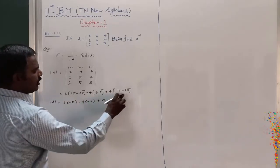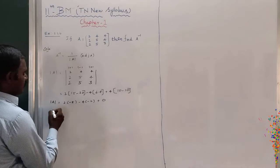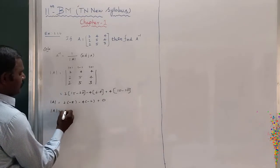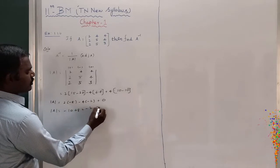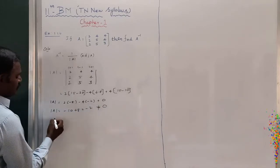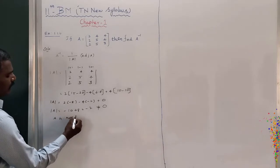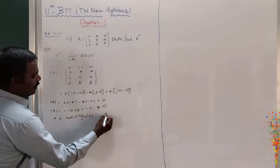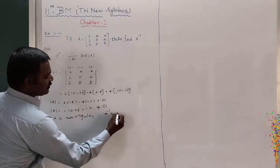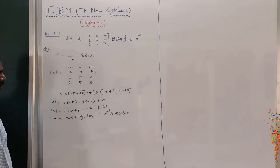10 minus 10 is 0, so modulus of A equals minus 10 plus 8 minus 2, which does not equal 0. Therefore A is non-singular, and A inverse exists. Next we have to find out the adjoint of A.